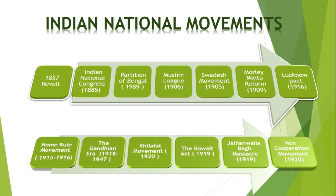Next was the Khilafat Movement, 1920. The Caliph, who was Sultan of Turkey, was looked upon by Muslims as their religious head. During the First World War, when the safety of Turkey was threatened by the British, Muslims adopted an aggressive anti-British attitude, leading to the Khilafat Movement of 1920.